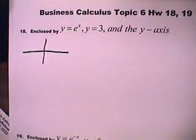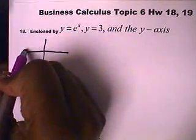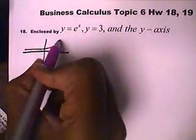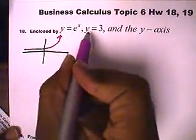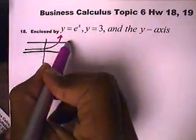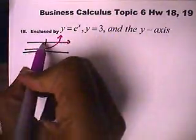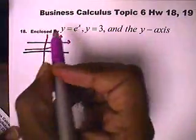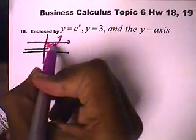Well, y equals e to the x, that's an exponential function that has slow to rapid growth. So, y equals 3 is the horizontal line, it looks like this, and the y-axis is here. So, the area that we're looking for is this area trapped here.